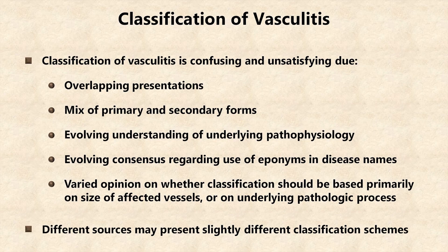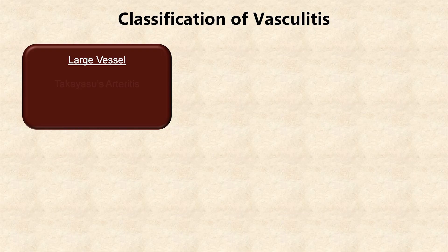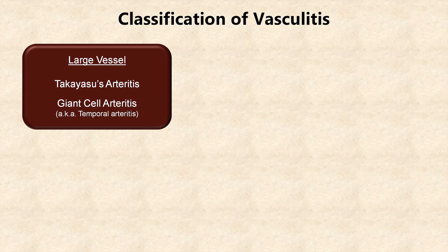The following classification is largely based on the most recent recommendations from the American College of Rheumatology. The first order division within vasculitis is based on the size of the target vessels. Large vessel vasculitis includes Takayasu's Arteritis, which predominantly affects the great vessels off of the aortic arch and has a predilection for young Asian women, and Giant Cell Arteritis, also known as Temporal Arteritis, which primarily affects branches of the carotid arteries and which is seen almost exclusively among the elderly.